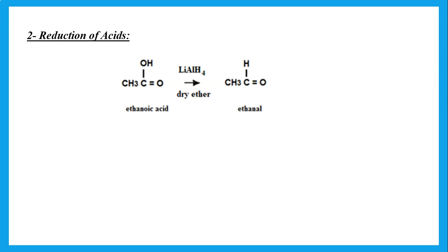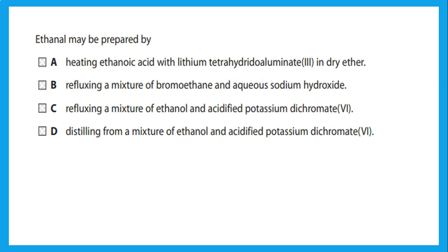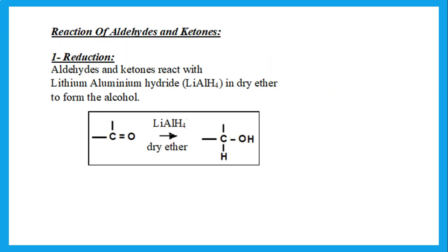If we continue to reduce the acid, it will go on to form an alcohol. So we can stop it in the middle and distill it off as it is being formed to get the aldehyde. Ethanol may be prepared by distilling from a mixture of ethanol and acidified potassium dichromate — ethanol is a primary alcohol, and oxidation followed by distilling of the product gives the aldehyde.